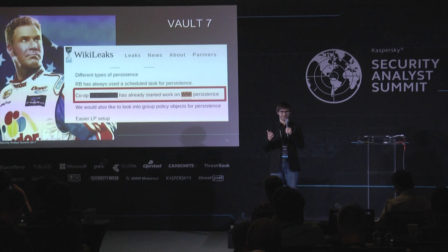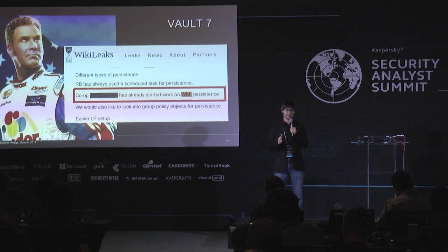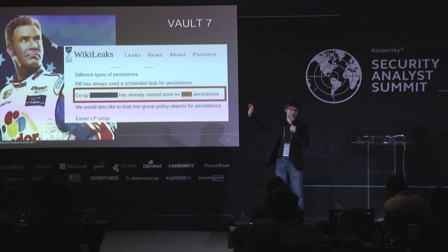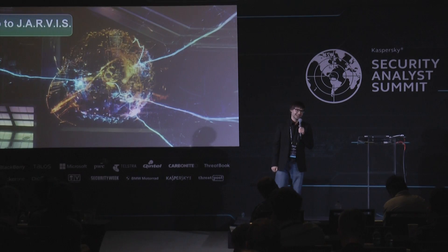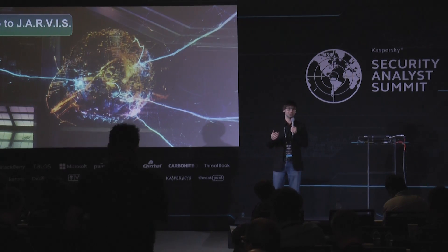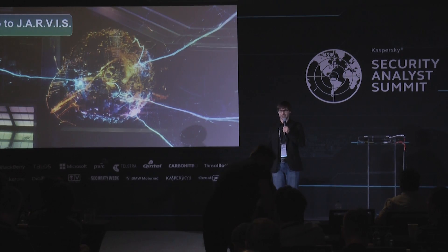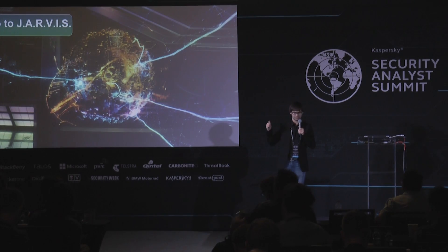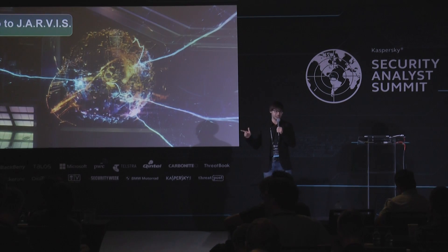What about real secret agencies? If you take a closer look at the Vault 7 documents, you will spot that someone had already started to implement a WMI persistence mechanism for their malware. So how do you detect such things? You need two things: A — behavioral detection, and B — analysis of big data. Combining these two approaches, you can spot that something bad is happening with your WMI storage.